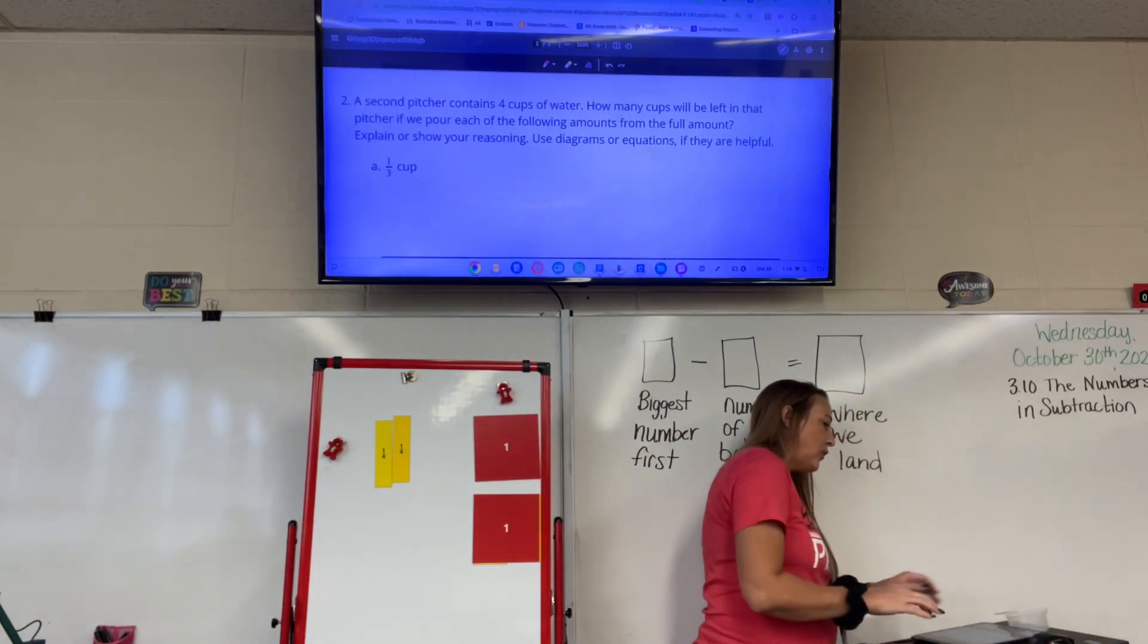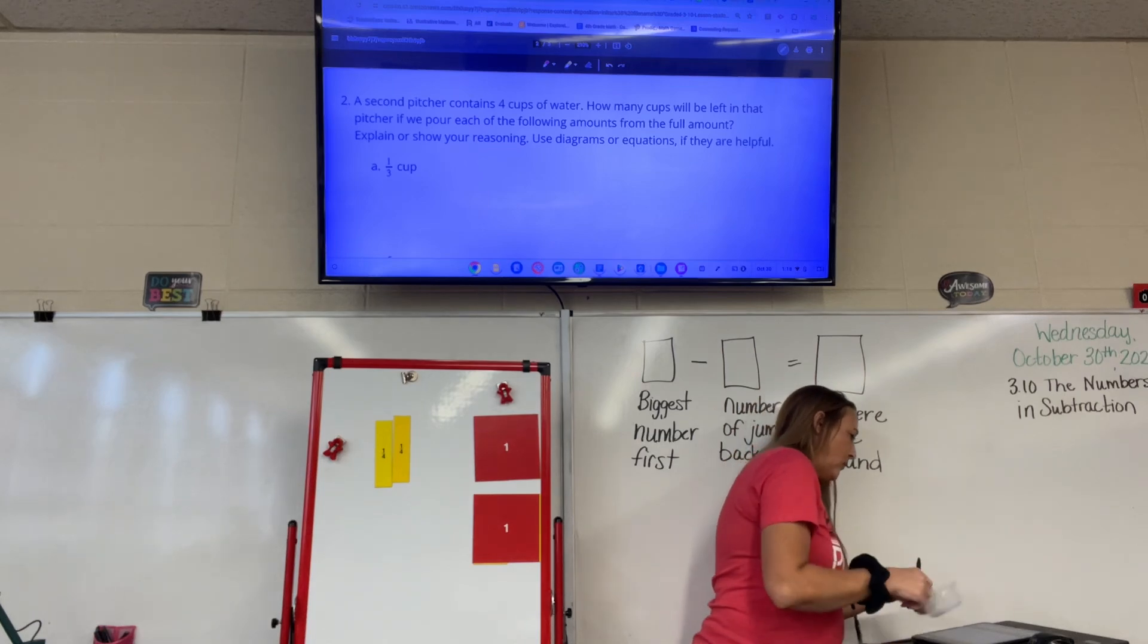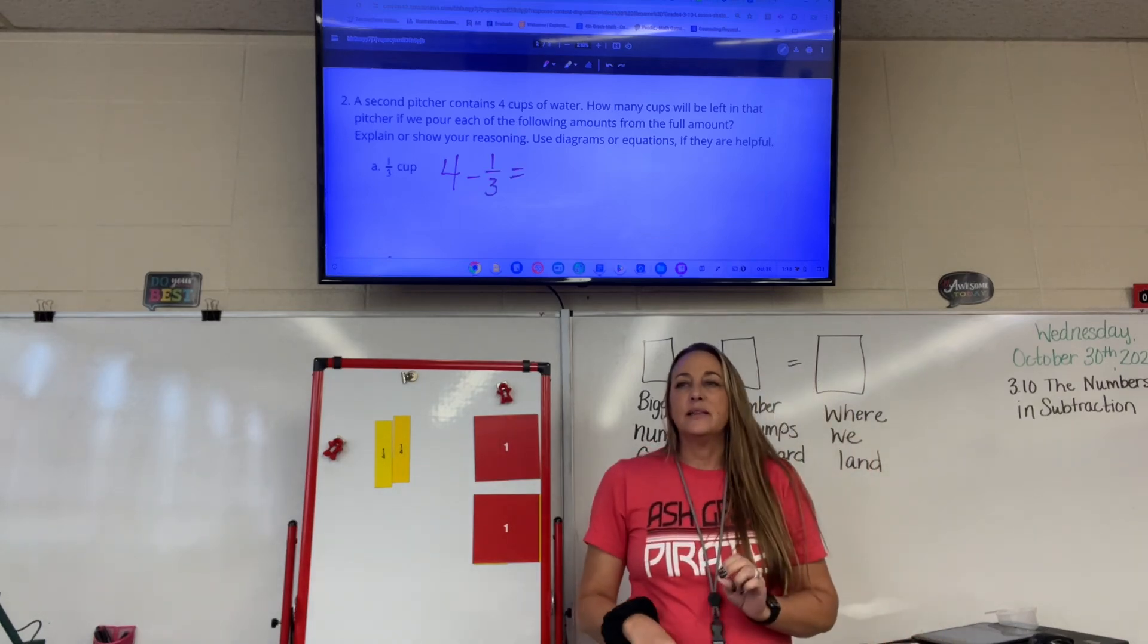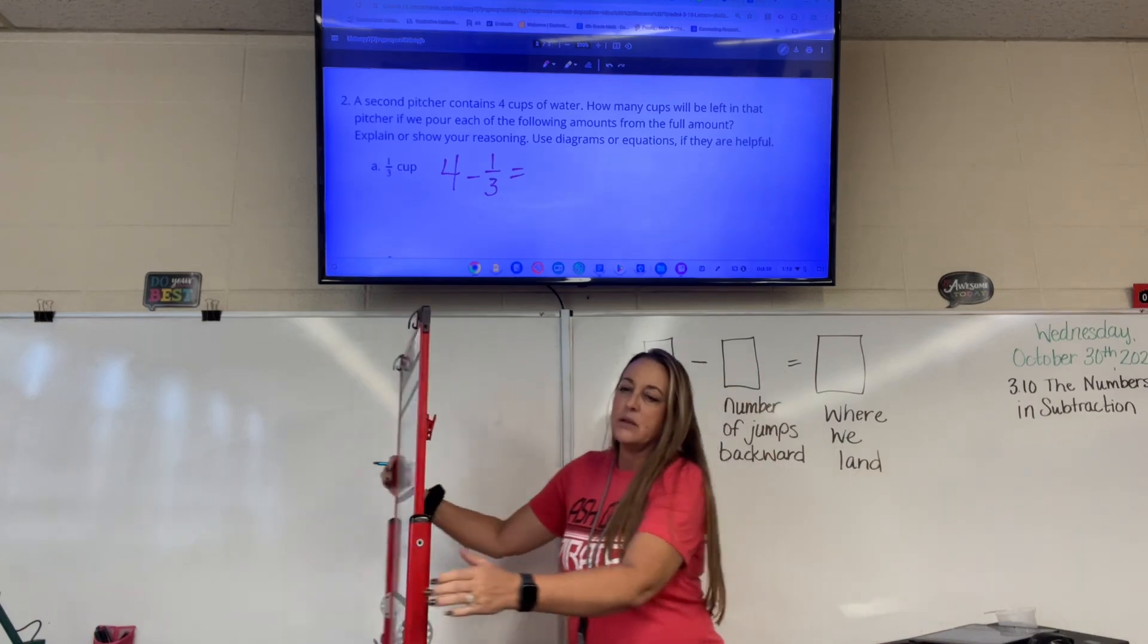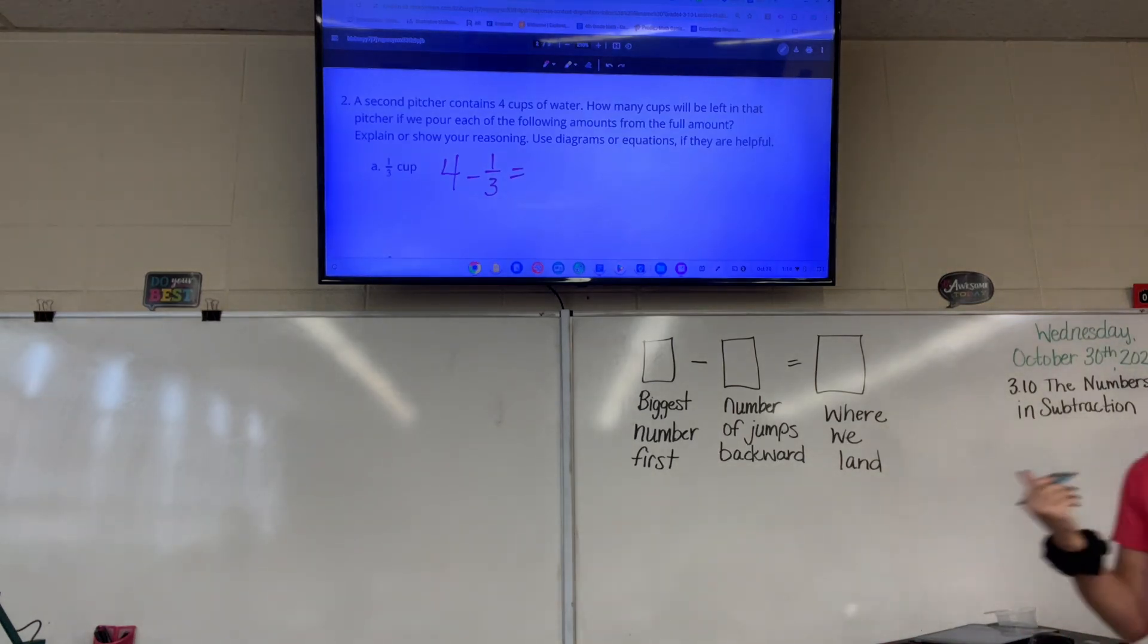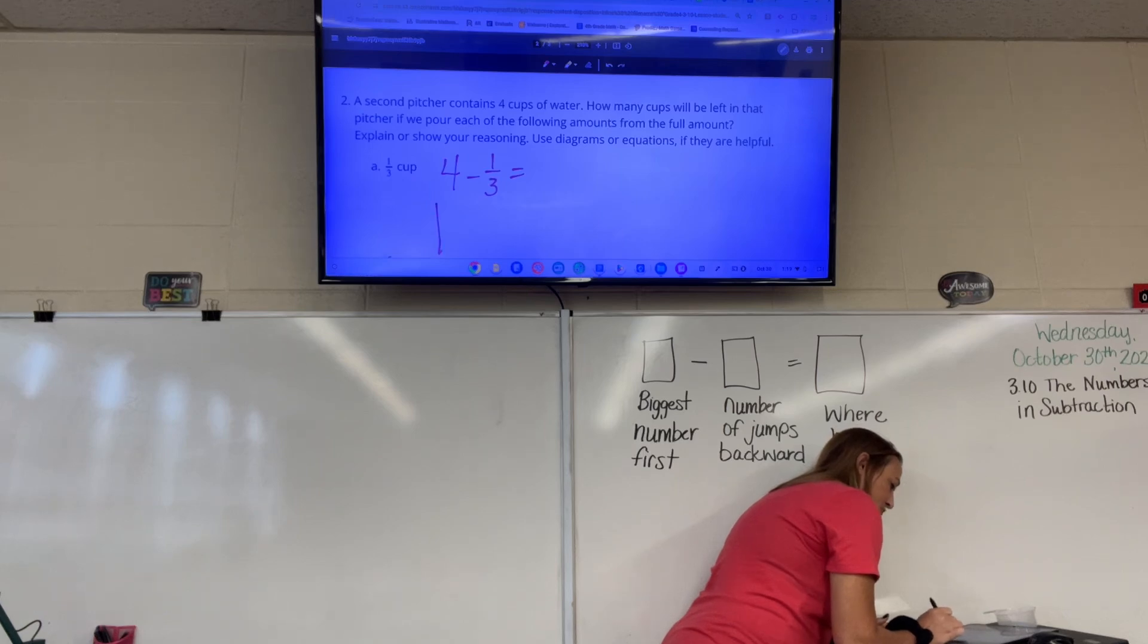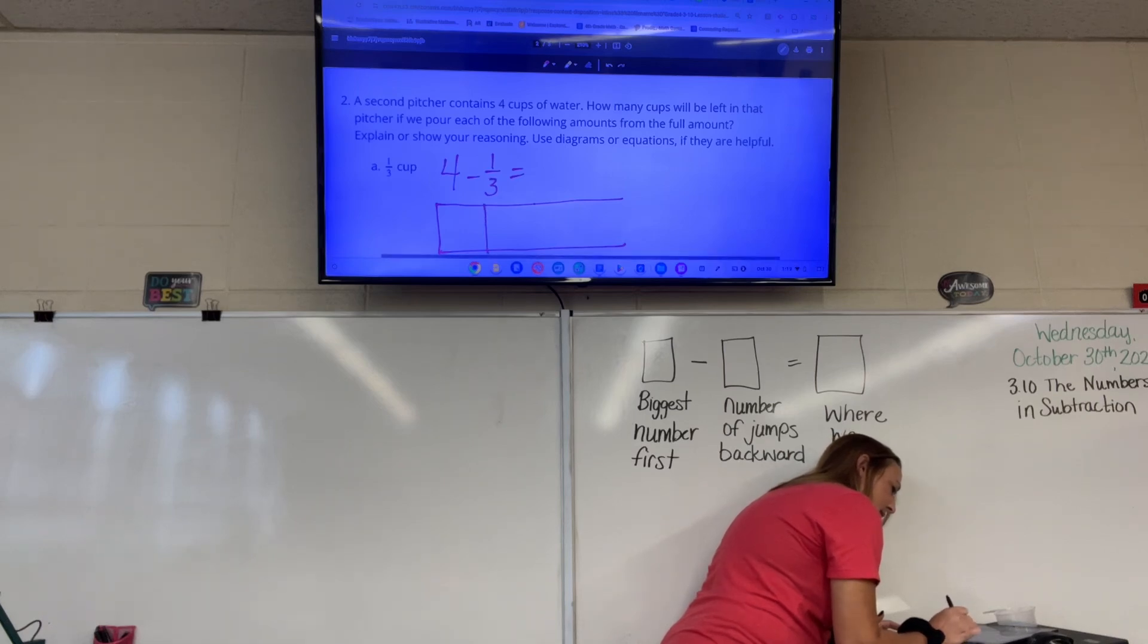A second pitcher contains four cups of water. So one, two, three, four. And we're going to take away one third cup. Four minus one third. So let's draw a picture that goes with this because you won't always have access to this guy, right? We're going to draw a picture because over the next unit, you guys are going to have to draw some models to help you solve some of these problems. We're going to draw a big rectangle here, and I'm going to go one, two, three, four.